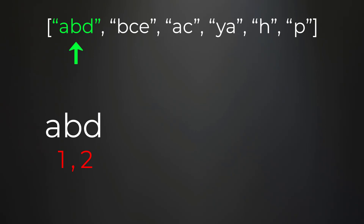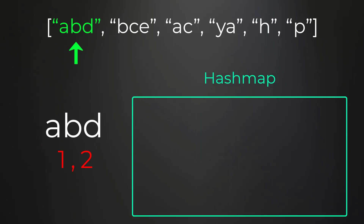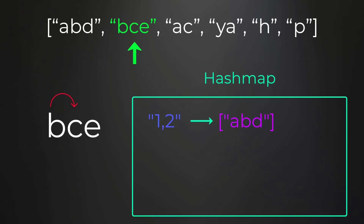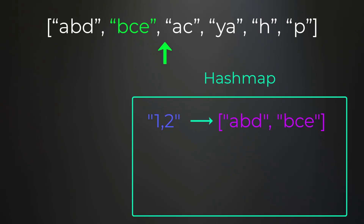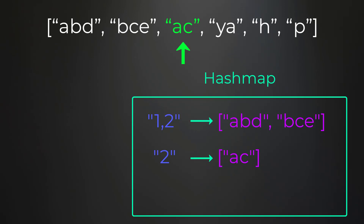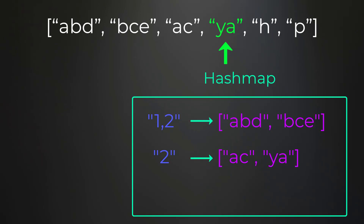We have a sequence of one comma two, and we check if that string is inside our hash map. Since it's not, we create a new entry with a list containing the string abd. Next, string bce: from b to c is one step, from c to e is two steps, so the shifting sequence is one comma two — that already exists in our map, so we just add bce to the list. Next, string ac: from a to c is two steps, so the shifting sequence is just two, and we create a new list. For string ya, to get from y to a we circle back around — one step from y to z and one step from z to a — so the shifting sequence is also two, and we add ya to that list.